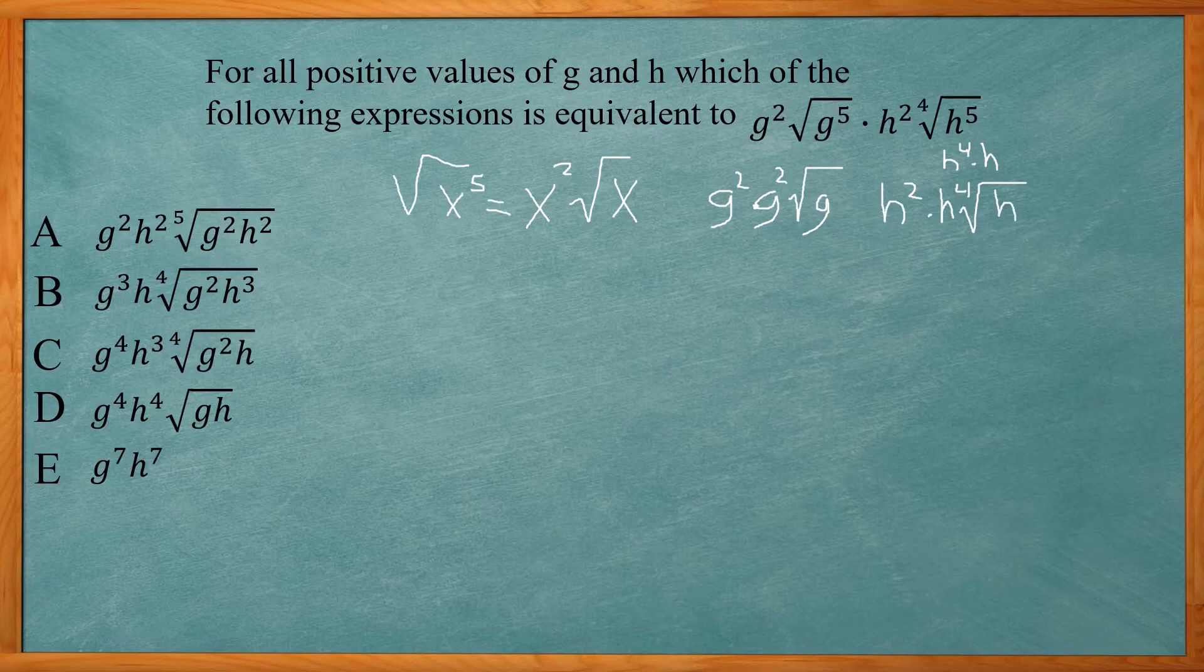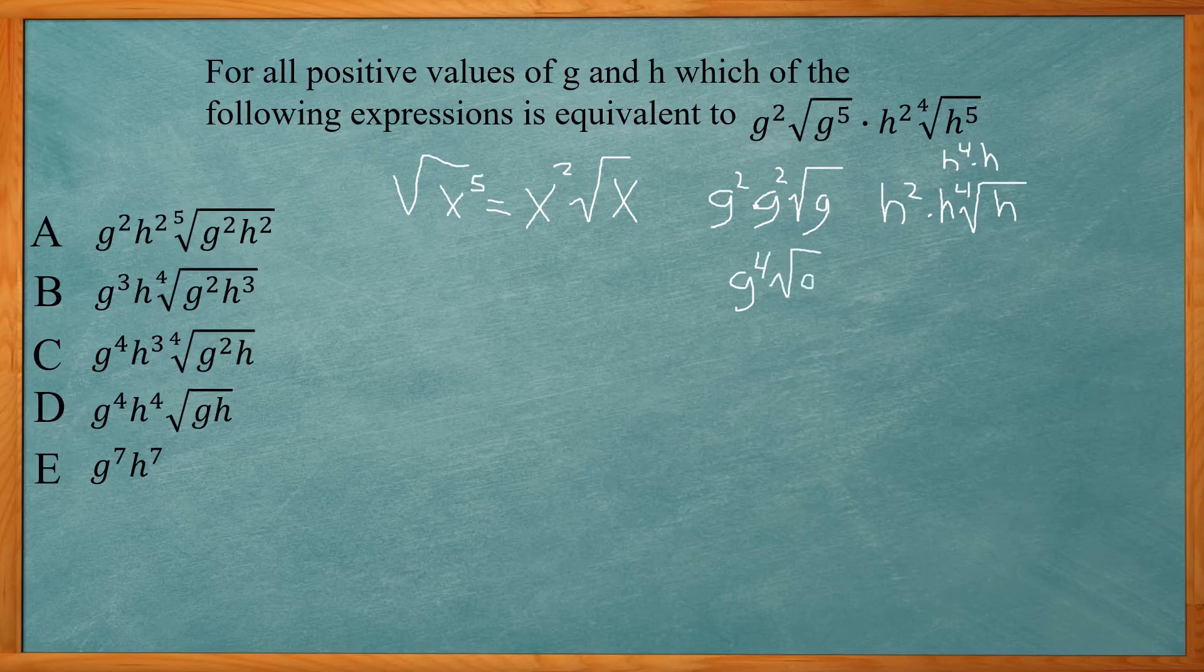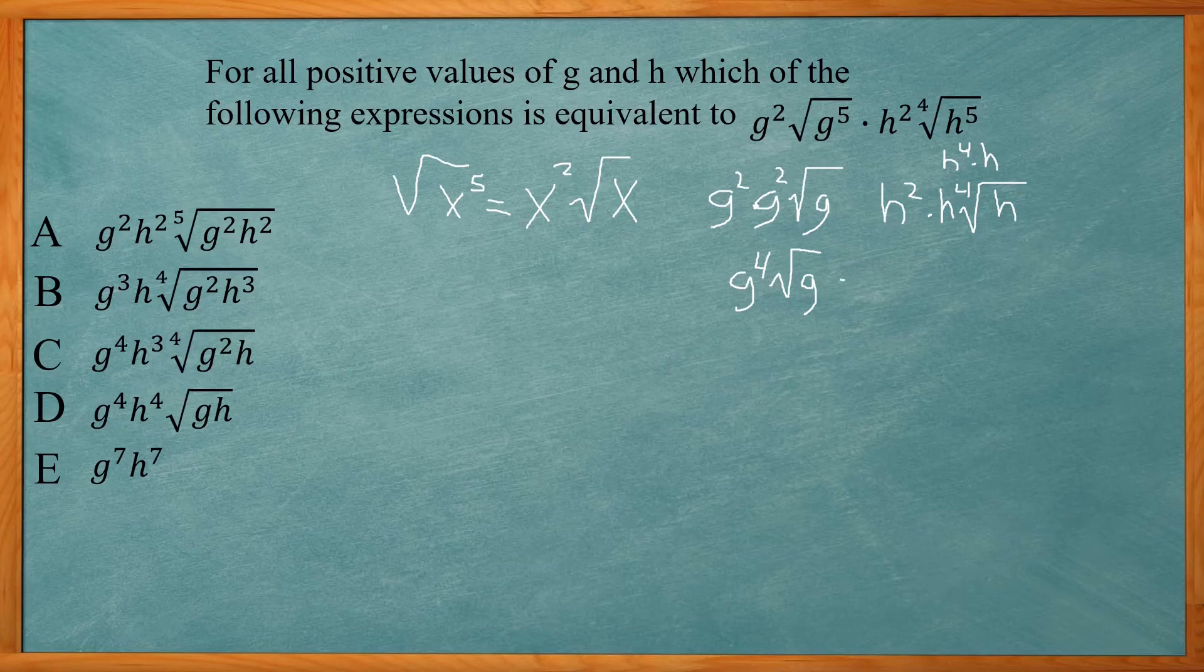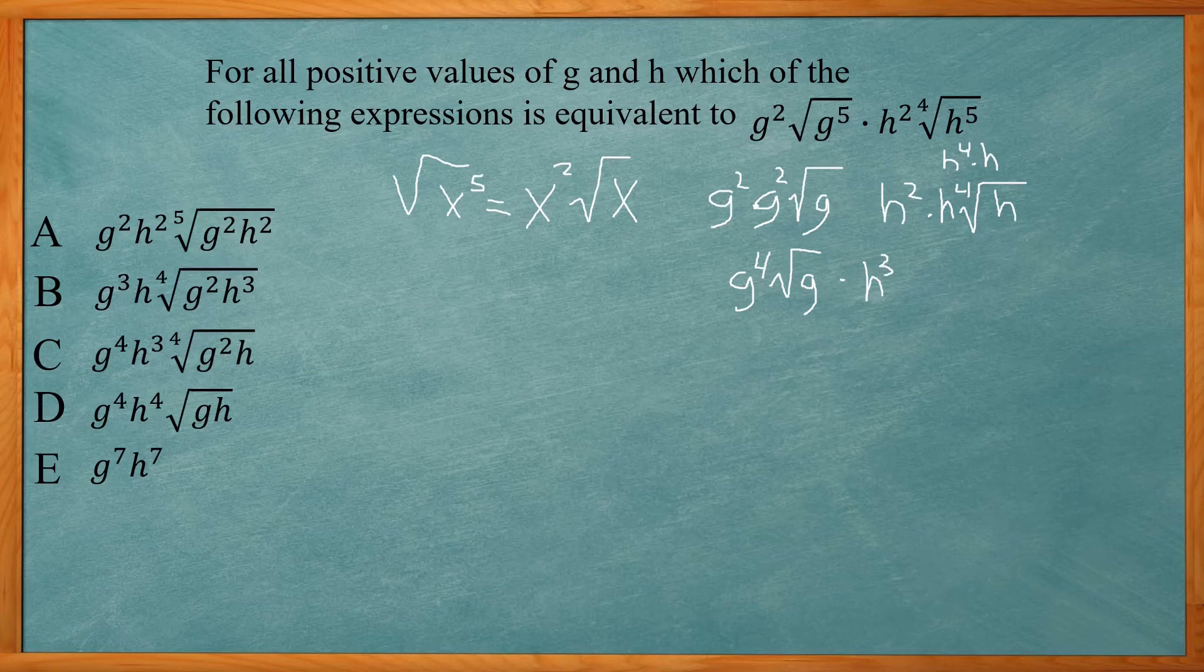So over here, g squared times g squared is g to the fourth power, square root of g. Now I get times h squared and h gives you h to the third power. And then fourth root of h.